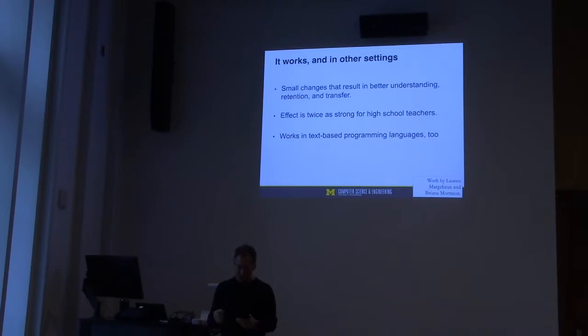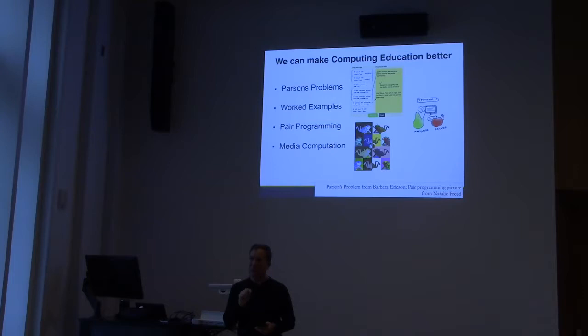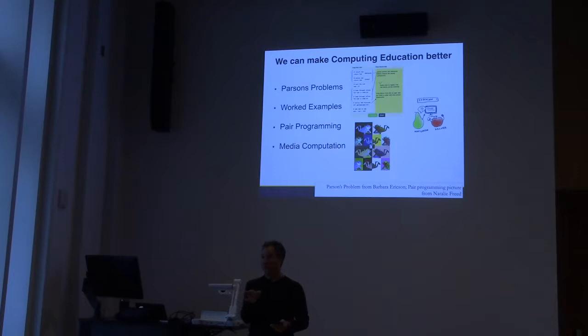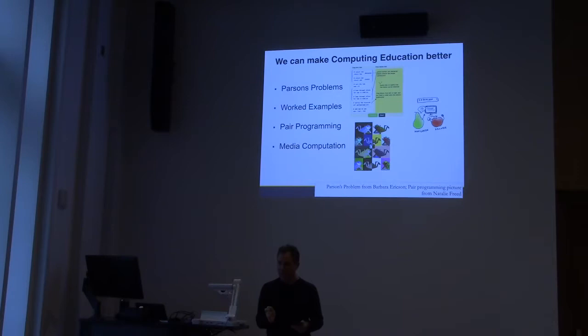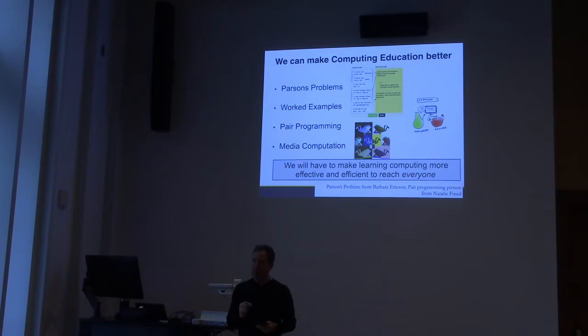This is about improving the efficiency and effectiveness of computing education. We have a lot of evidence that we can make computing education better. Barbara has been doing wonderful work with Parsons problems — I give you the lines of code scrambled on refrigerator magnets, put them in the right order, and some of the magnets you don't want. Barbara has shown this can be as effective as writing or debugging code in terms of learning, and it takes much less time. There's also great research on worked examples and pair programming. If we really want to get computing education to everybody, we have to think about efficiency and effectiveness. We can do computing education better.